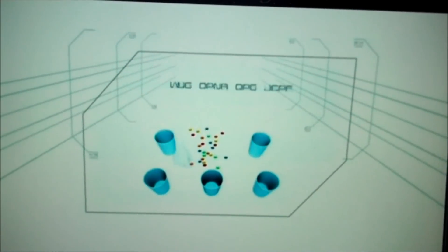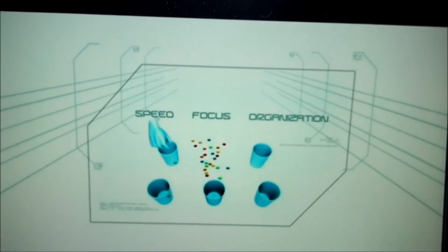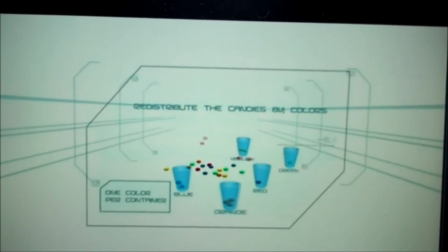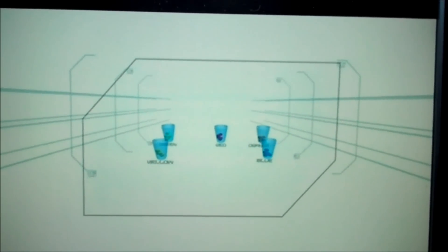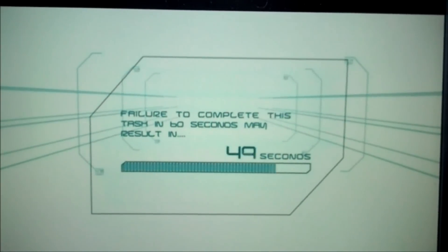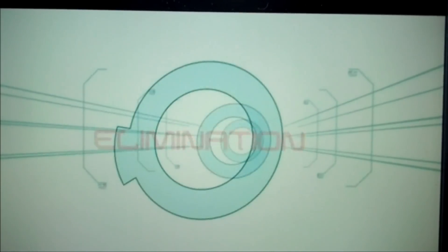In this challenge, using one hand, the contestant will use speed, focus, and organization to separate and redistribute them in order by color into individual containers. Failure to complete this task in 60 seconds may result in elimination.